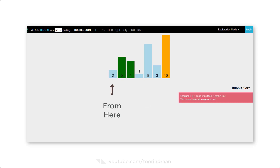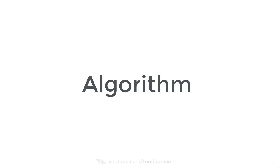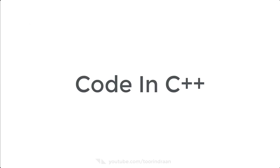Each time the algorithm goes through the list it is called a pass. The total number of passes is the number of total elements minus 1. Now that you have an idea of how bubble sort works, it will be easier to understand the algorithm. The algorithm says: from the starting position, compare the first and second element, check if the larger-than condition is met, then interchange the left and right elements, and keep following this process until all elements are sorted.